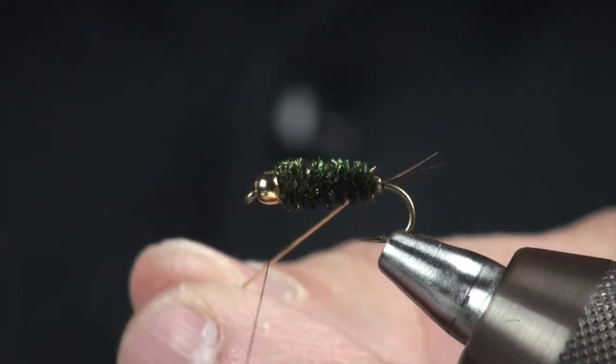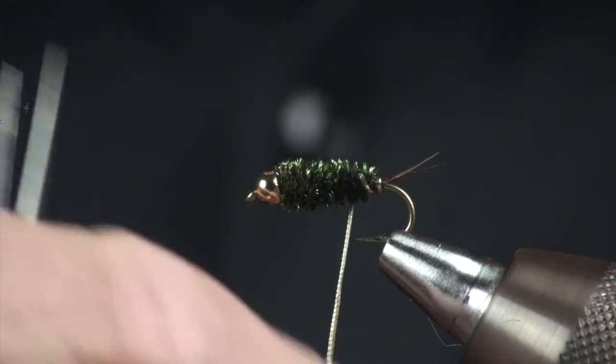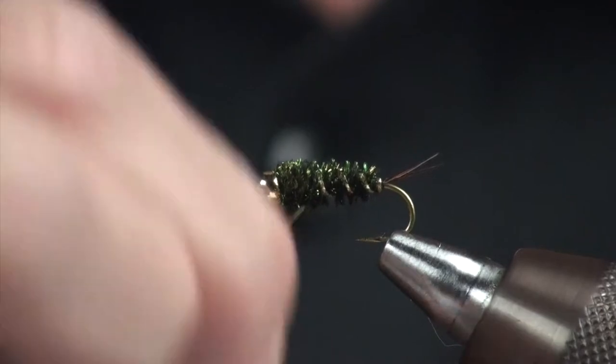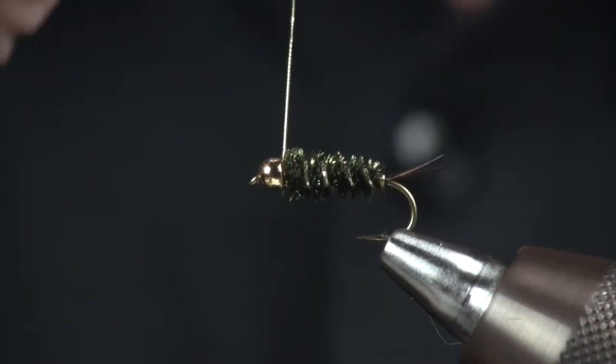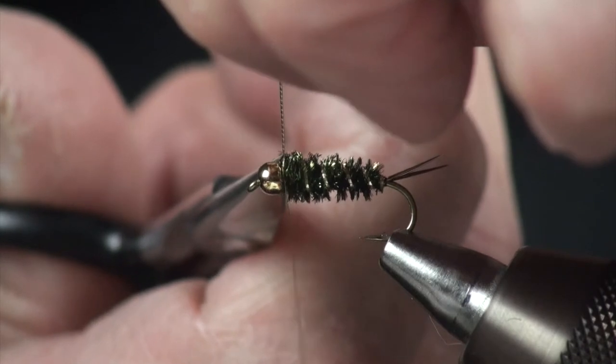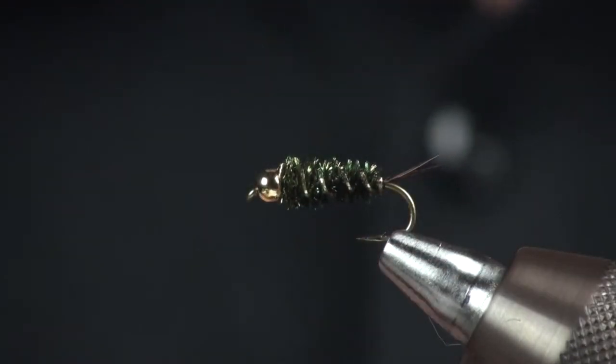Then with this Lagartun, I'm going to counter wrap through all this herl. Counter wrap gives me a little bit more security. Kind of builds up, keeps that herl from coming apart. And I can clip that off.